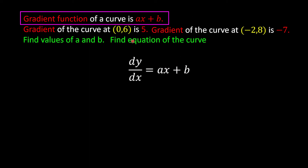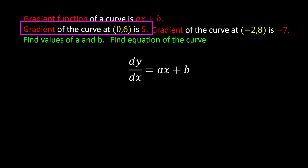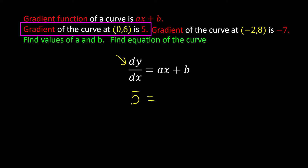When the gradient is 5 and x is 0, substituting into dy over dx equals ax plus b gives 5 equals a times 0 plus b, so 0 plus b equals 5. Therefore b is equal to 5.